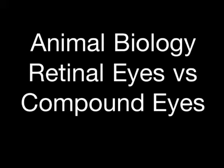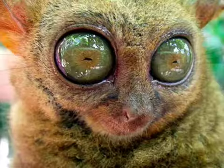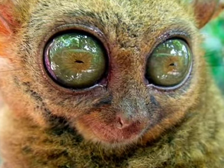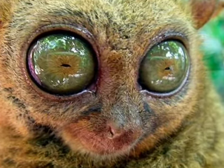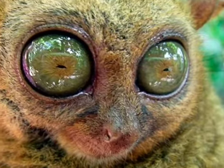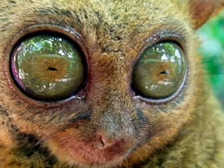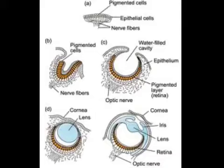Evolution of eyes is believed to occur over millions of years, beginning with simple light-detecting spots and developing into the very complex organisms seen today. They have become vital to species survival. Even Darwin knew that explaining eye evolution would be difficult, but the concept was plausible.